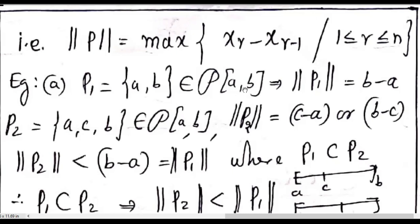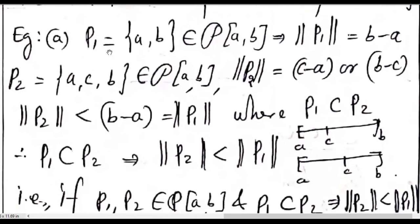We know that [a, b] consists of n subintervals: [x_0, x_1], [x_1, x_2], and so on. We find the length of each subinterval; whichever gives the maximum value is called ‖P‖. For example, if P1 = {a, b}, then ‖P1‖ = b − a. If P2 = {a, c, b}, it has two subintervals [a, c] and [c, b], so ‖P2‖ is either c − a or b − c.